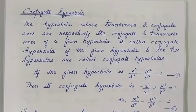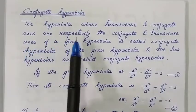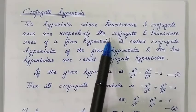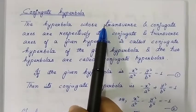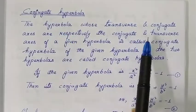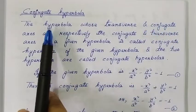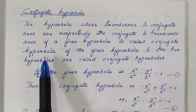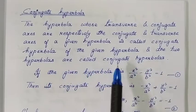Hello everyone, welcome back to my channel. Today we will study about conjugate hyperbola. The hyperbola whose transverse and conjugate axes are respectively the conjugate and transverse axes of a given hyperbola — so the conjugate axis becomes the transverse axis and vice versa — is called the conjugate hyperbola. The two hyperbolas are then called conjugate hyperbolas of each other.